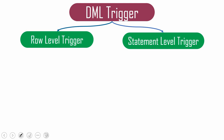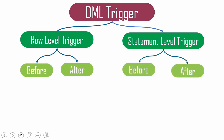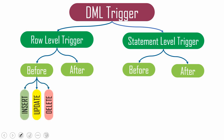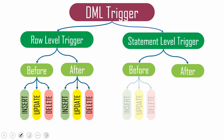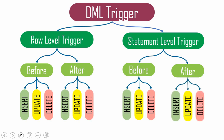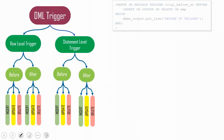These triggers are further classified into before trigger and after trigger — whether the trigger has to be fired before the DML operation or after it. Based on the type of DML being executed, they are further classified into insert, update, and delete triggers. Altogether, we have 12 different types of triggers, but to implement all 12, we basically need to write at least a minimum of four types of triggers.